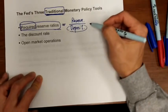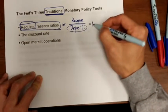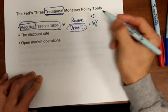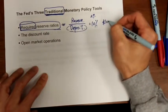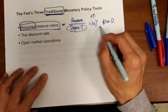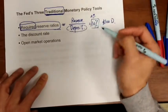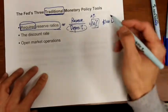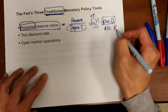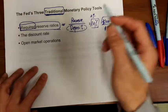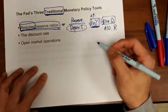The Fed sets the required reserve ratio. For example, if the required reserve ratio is 10%, and a bank receives $100 of deposits, the central bank says you are required to keep at least 10% — that is $10 — in your reserve. This ratio is set by the Federal Reserve Bank and is a monetary policy tool.